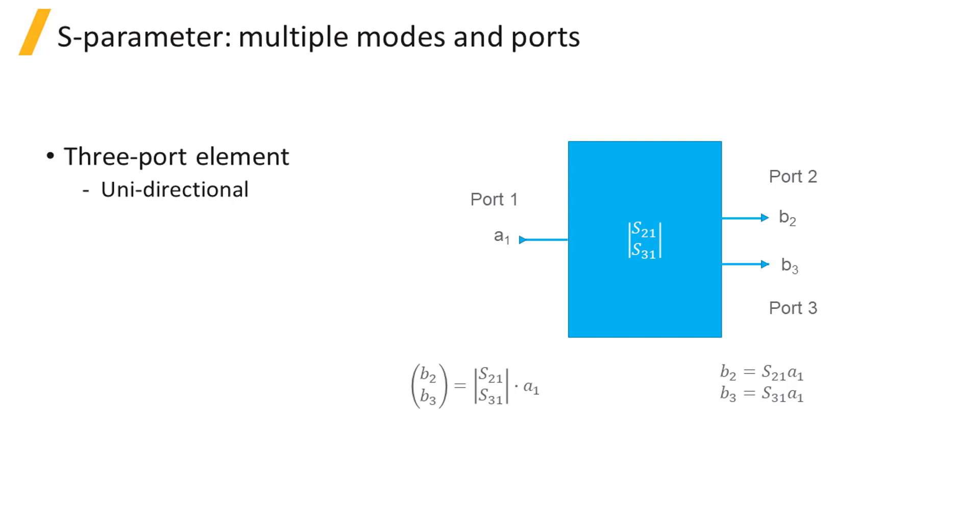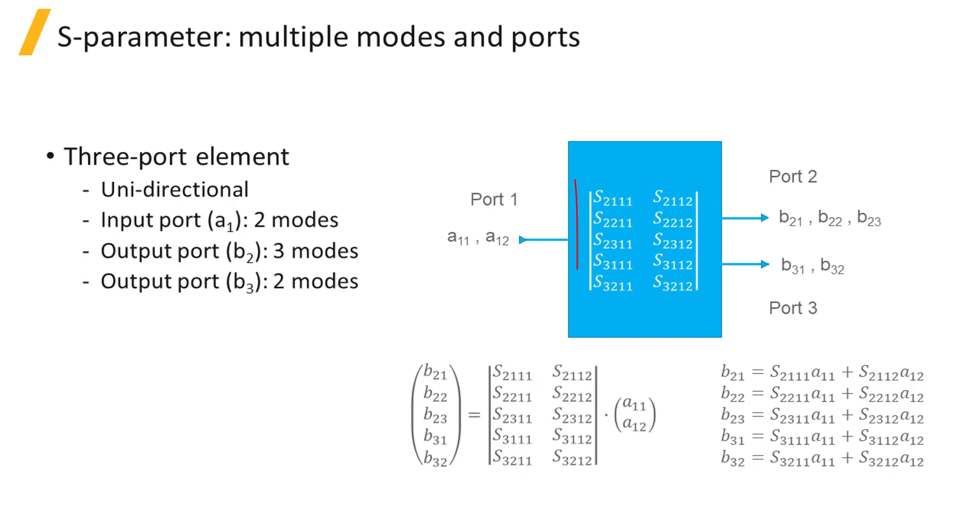Elements can support multiple ports, and each port can support an arbitrary number of modes. The size of the S-matrix depends on the number of ports and modes. For example, here is the S-matrix for the same unidirectional element we saw before, but now with 3 ports. And here is the S-matrix when the same element supports 2 modes at port 1, 3 modes at port 2, and 2 modes at port 3.